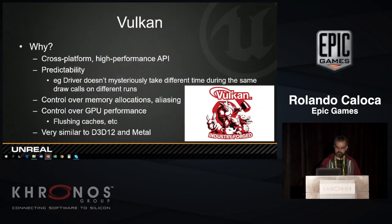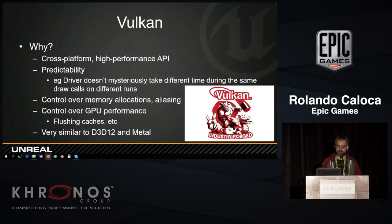Why do we want to use Vulkan? It's cross-platform, high-performance, and predictable. Sometimes on other drivers, you're running a game and you get a hitch in one of the draw calls, then run it again and the hitch is gone on the same draw call. With Vulkan, we have control over that. We have control over memory allocations, over aliasing of memory, and on GPU performance especially, we can now say when we want to flush a cache or not. Plus it's very similar to D3D12 and Metal.